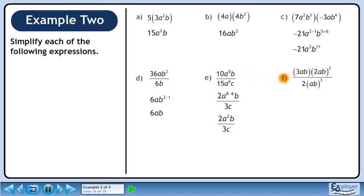Now we'll move on to part f. In the numerator, 2ab squared gives us 4a squared b squared. In the denominator, ab cubed gives us a cubed b cubed.